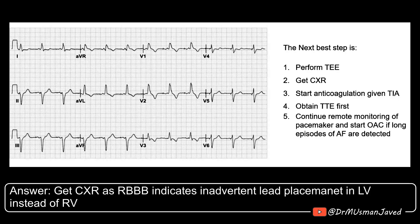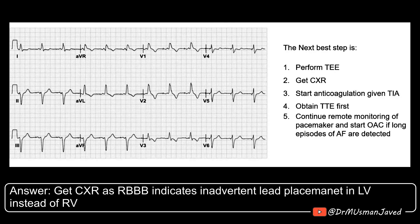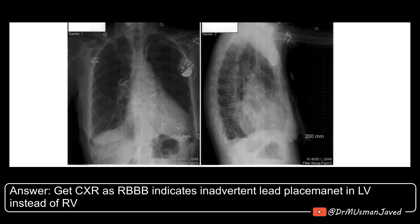The reason is that if we go back to the ECG, there's a dual chamber pacemaker, and what you expect in an RV lead is to get a left bundle morphology in V1, with the RV being the anterior chamber. The fact that we have a right bundle branch block morphology should make you think of placement in the left ventricle. And that's exactly what happened in this case.